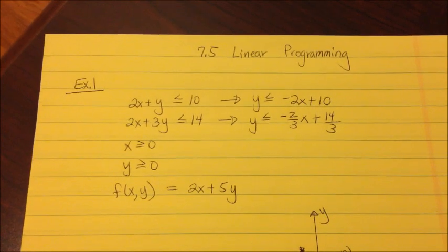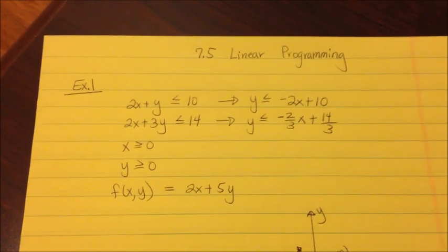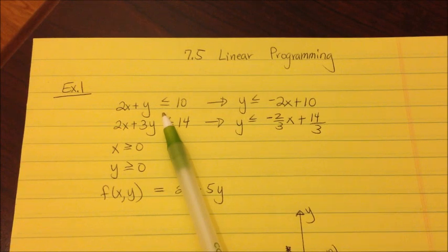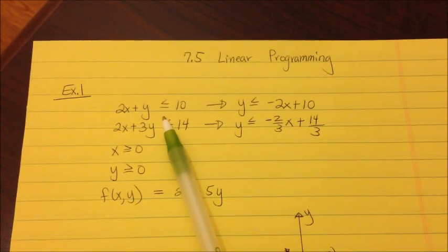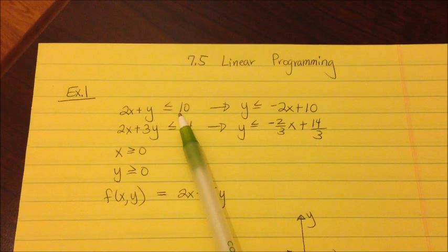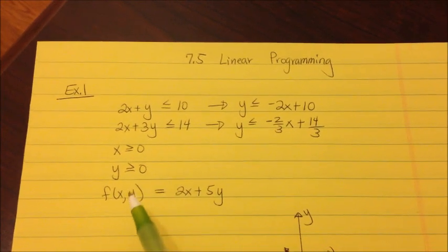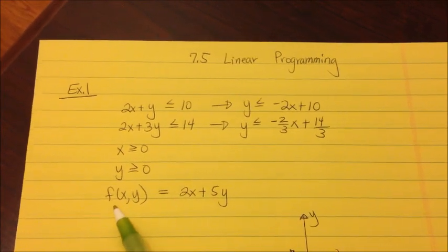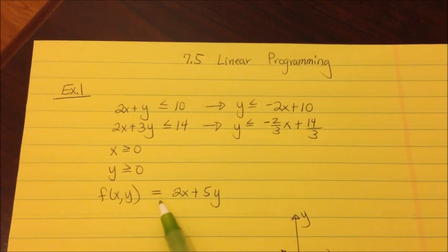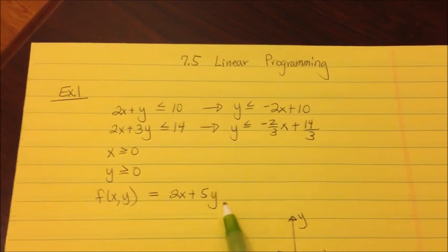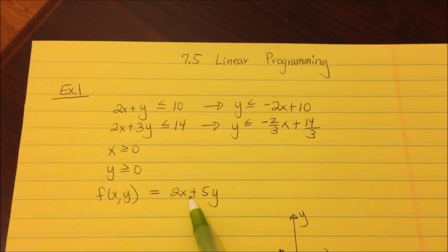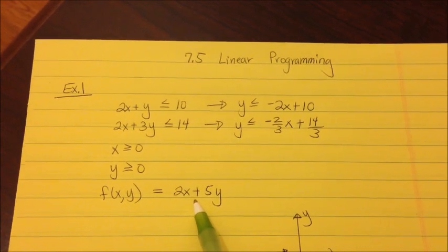This section is on 7.5 linear programming. In the previous section, we graphed equations and shaded the problem because it's an inequality. For this section, we're going to continue and add one more factor: f(x, y). They're going to give you an equation, and this equation is not always going to be the same — that's the part that will change.